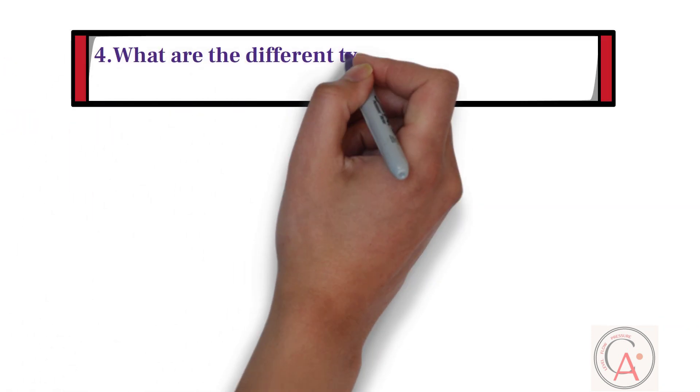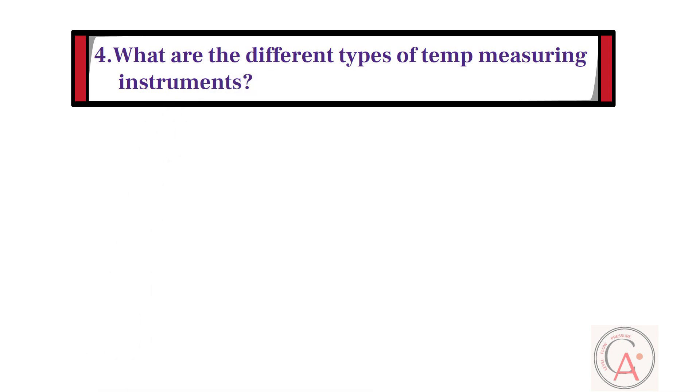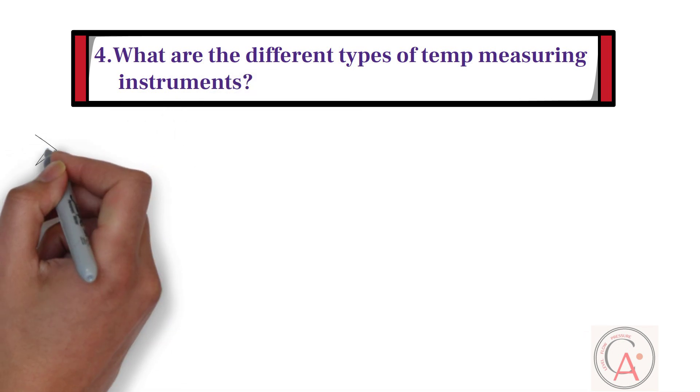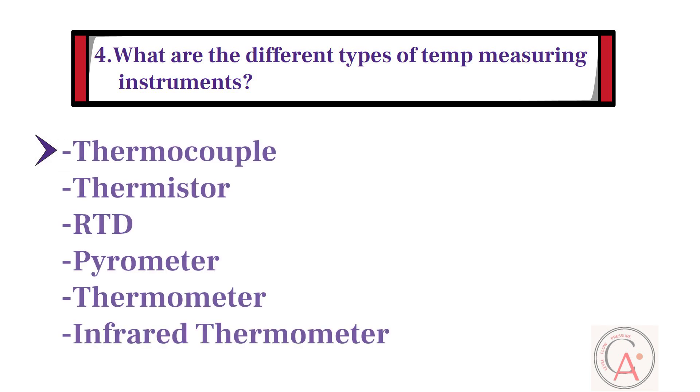The fourth question is, what are the different types of temperature measuring instruments? There are mainly five different types of temperature measuring instruments. The first type is a thermometer, the second type is a thermistor, the third type is RTD, fourth type is pyrometer, the fifth type is a thermocouple, and the sixth type is an infrared thermometer.